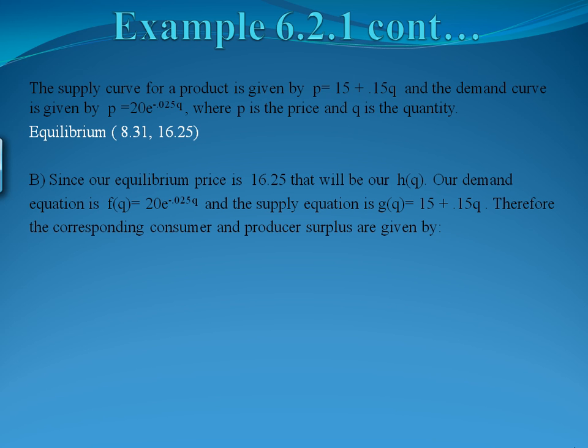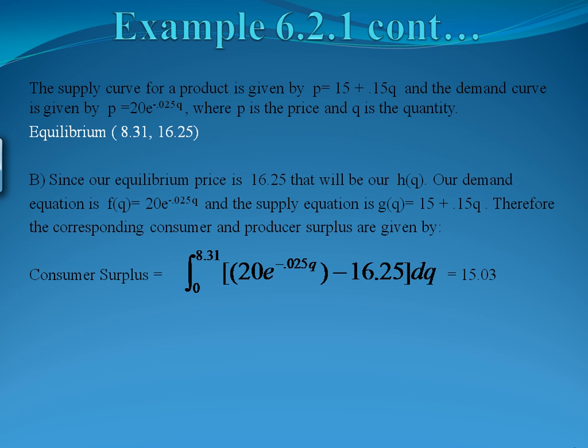For the second part of our problem, we need to use the equilibrium price and quantity that we found in the first part. Since our equilibrium price is 16.25, that is our h of q — the equation we use as part of our calculation for producer and consumer surplus. Our demand equation is 20e to the negative 0.025q, and the supply equation, g of q, is 15 plus 0.15q. The consumer surplus will be the integral from 0 to our equilibrium quantity of 8.31 of the demand equation, 20e to the negative 0.025q, minus our equilibrium price of 16.25. Plugging this into our calculator gives us a consumer surplus of 15.03.